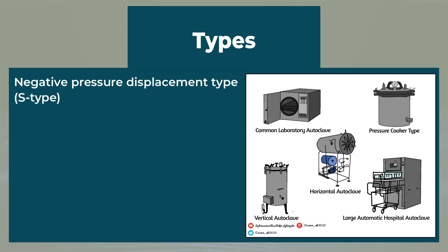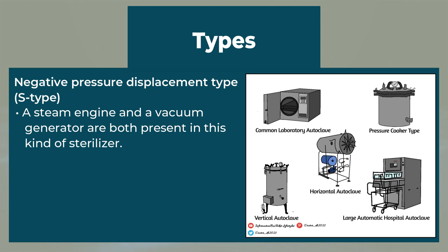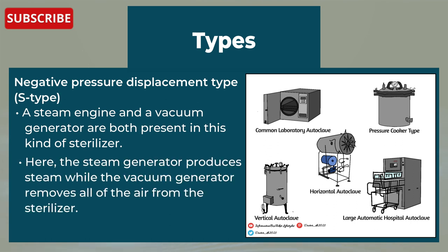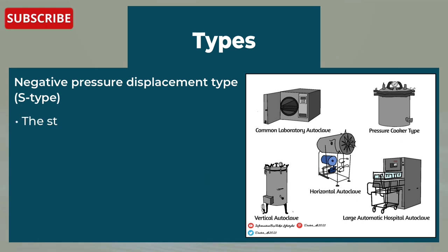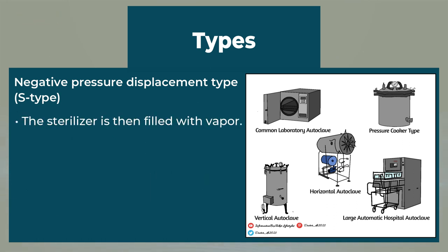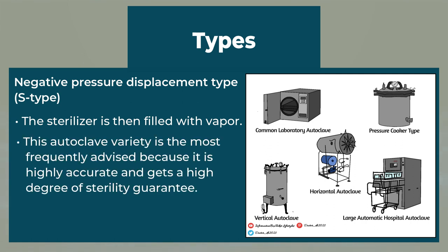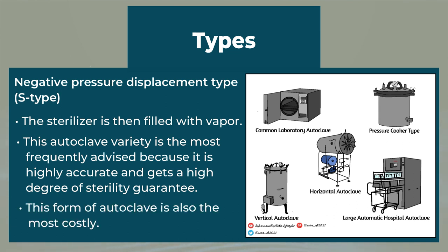Lastly, the negative pressure displacement type. A steam generator and a vacuum generator are both present in this type of sterilizer. The steam generator produces steam while the vacuum generator removes all of the air from the sterilizer, and the sterilizer is then filled with vapor. This autoclave variety is the most frequently advised because it is highly accurate and achieves a high degree of sterility guarantee. This form of autoclave is also the most costly.